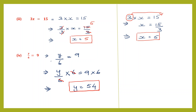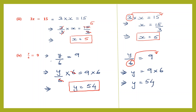Now the transposition method: y/6 = 9. To find the value of y, we transpose 6, which is division on the left-hand side, to the right-hand side where it becomes multiplication. So y = 9 × 6 = 54. We have solved for y. In these four sums we tried both methods — use whichever method you follow in school.